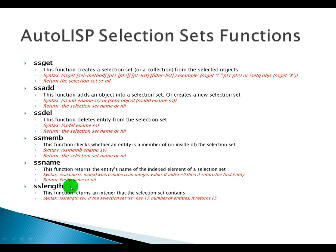SSLength returns an integer representing the number of objects the selection set contains. For example, if the selection set has 15 objects, it will return 15. This is very useful when doing a while loop or looping through the selection set, using the length as a conditional value to evaluate whether the last object has already been processed.